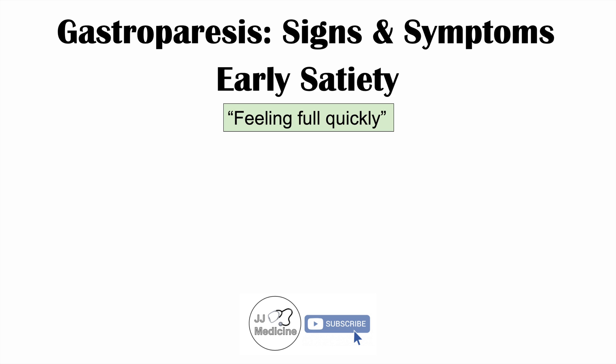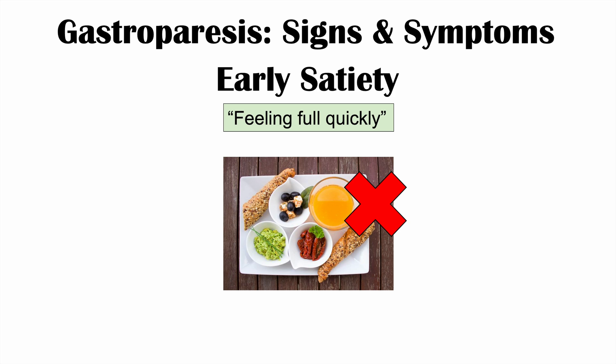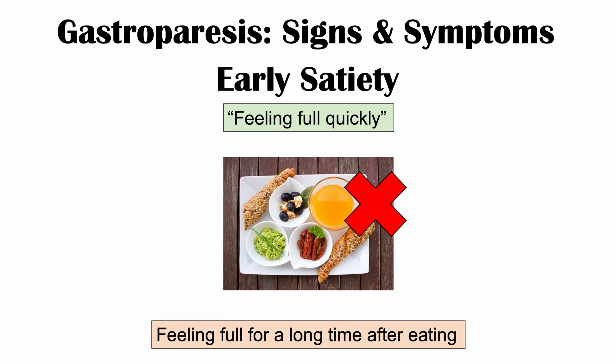Another symptom of gastroparesis is early satiety. Early satiety is essentially feeling full quickly — you feel that you can eat a lot, you have a good appetite, you eat, but then you feel full very quickly. This can be due to food not being able to pass along through your stomach properly, so it'll sit in your stomach and you feel full because of that. There's also this feeling of being full for a long time after eating, even long afterwards.